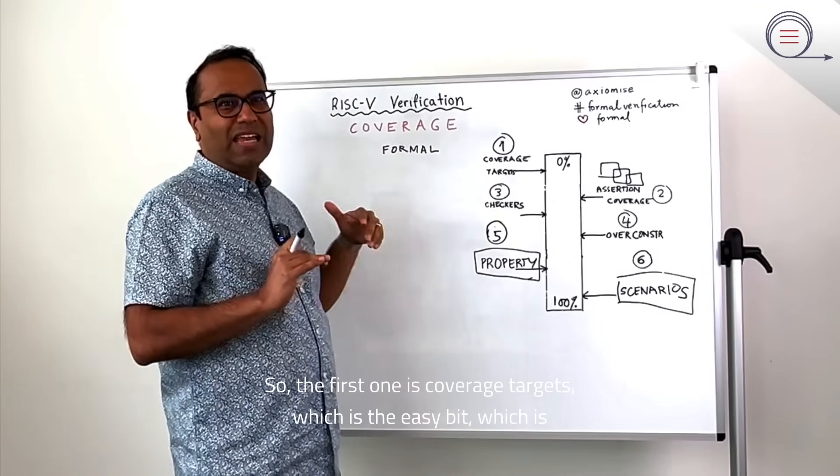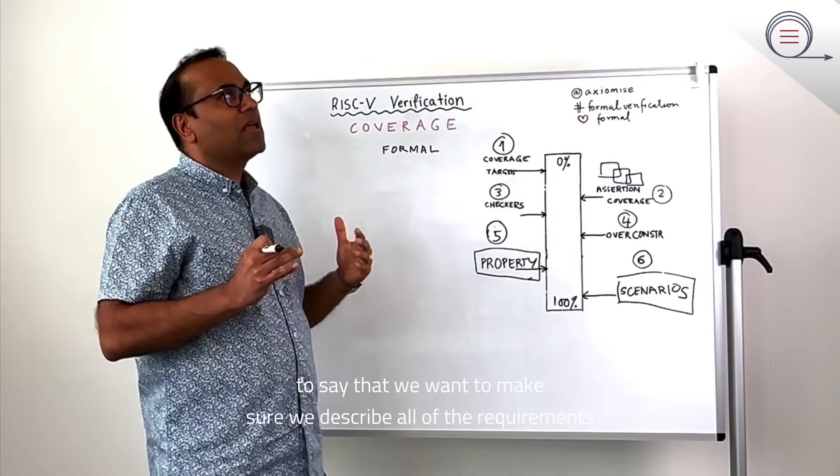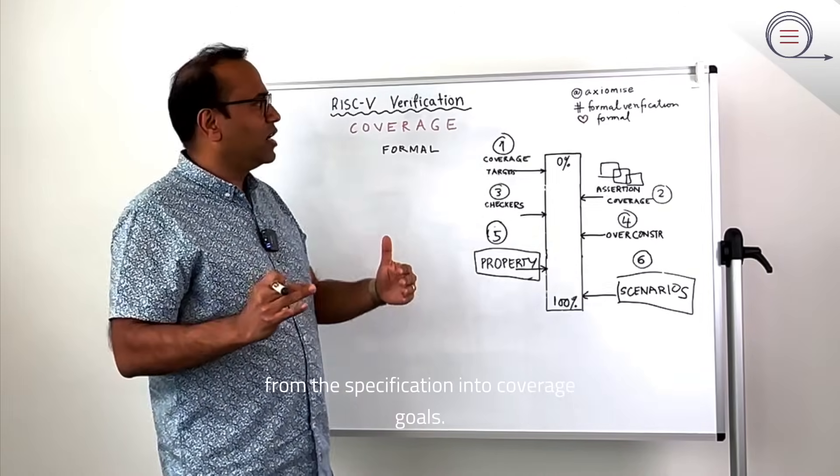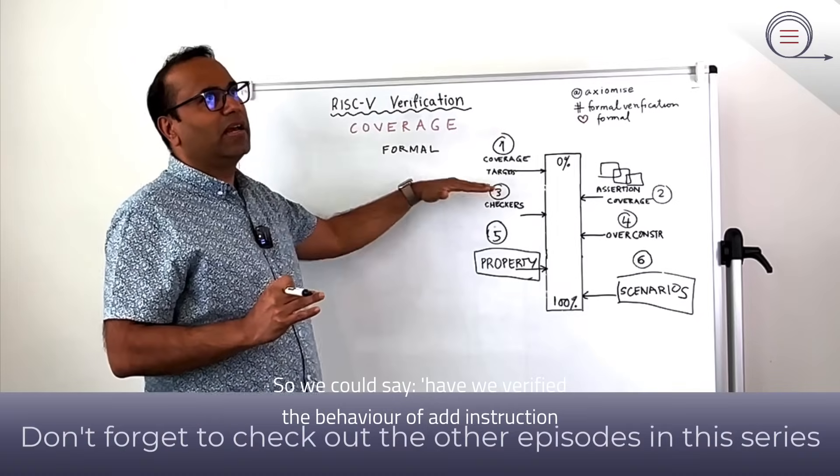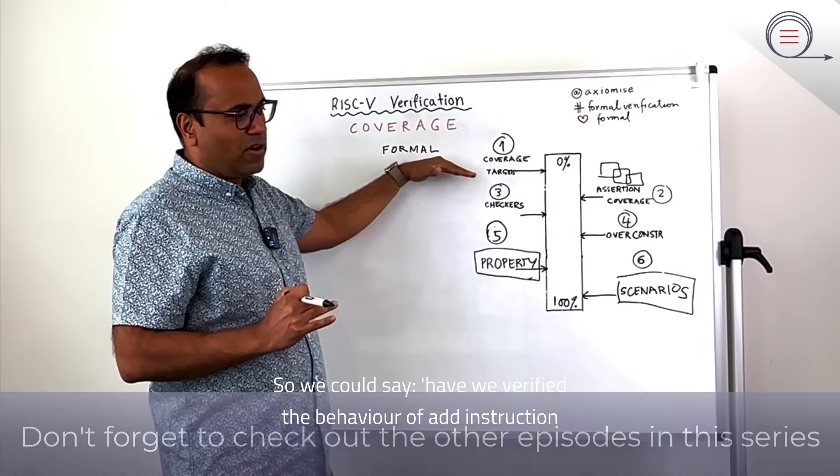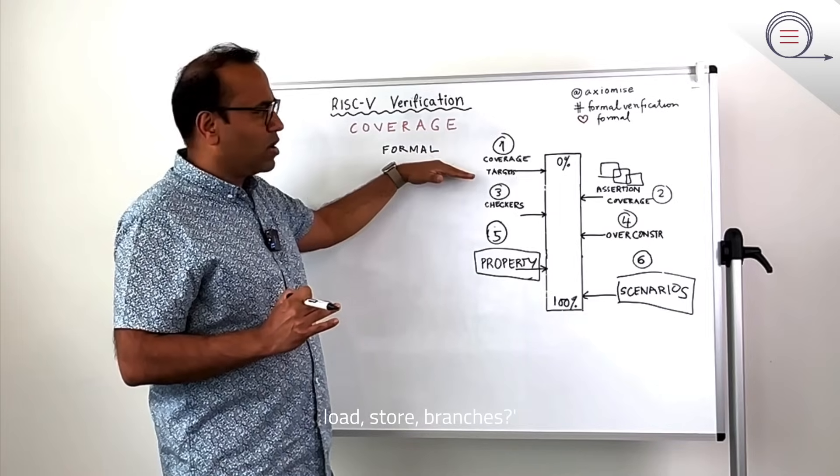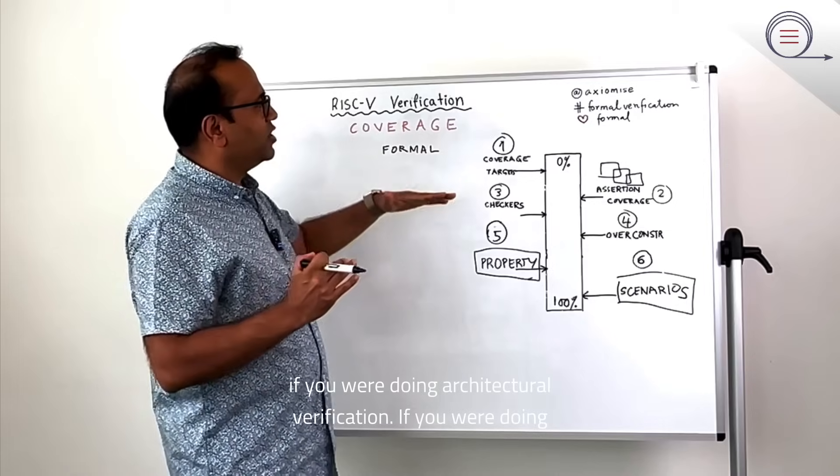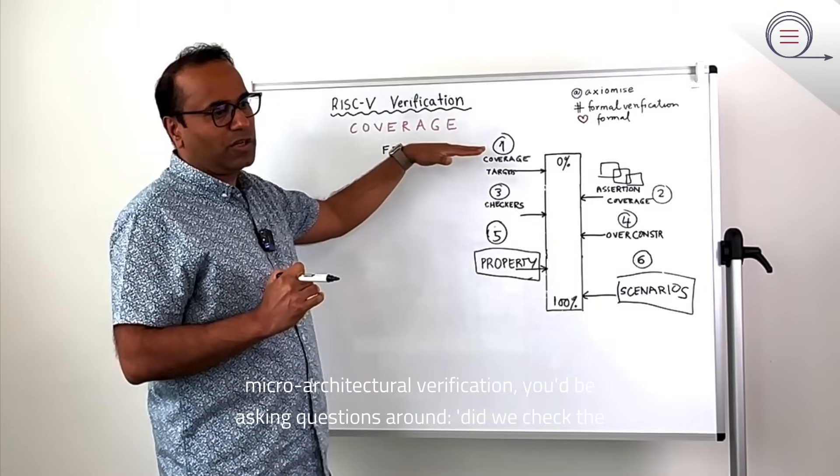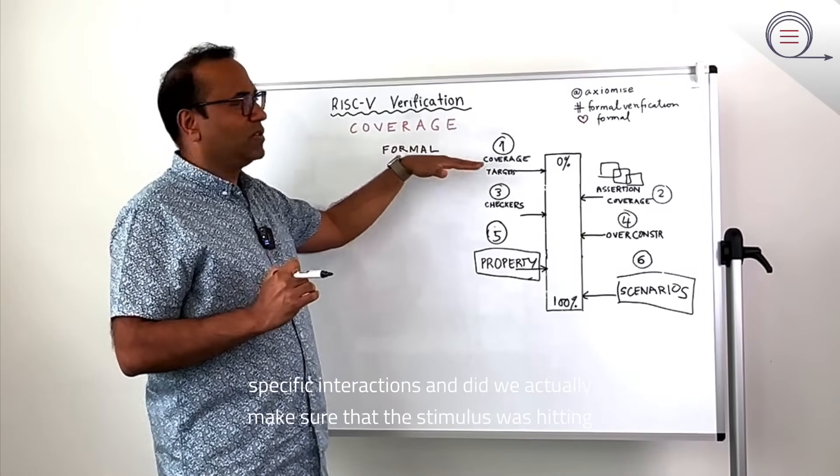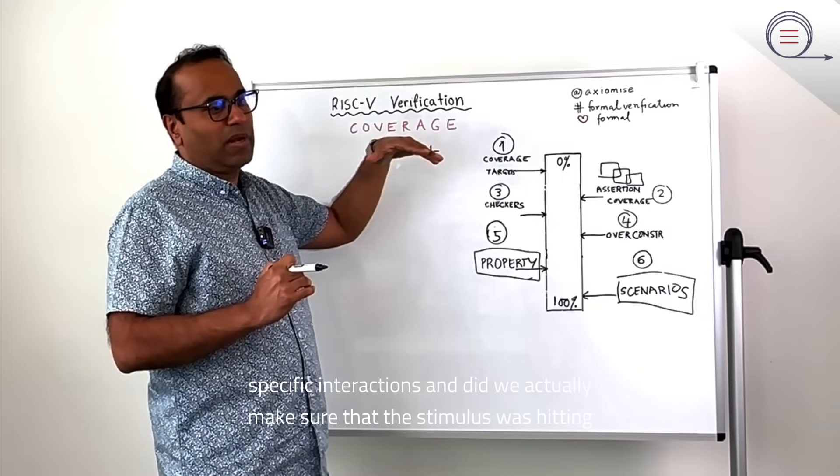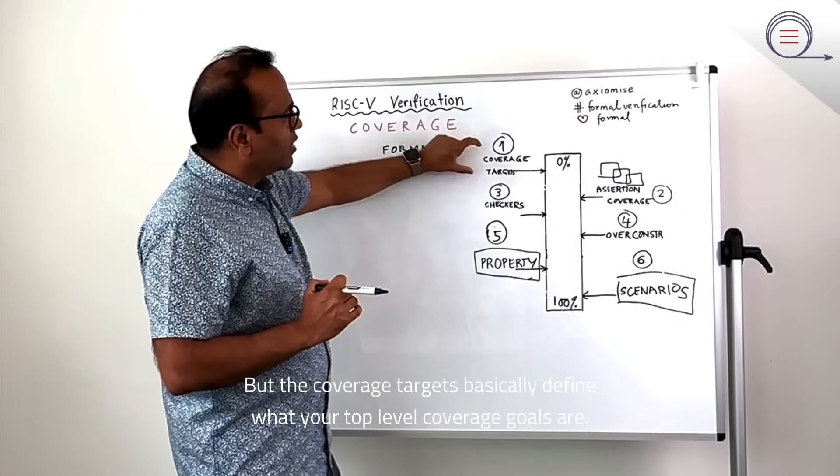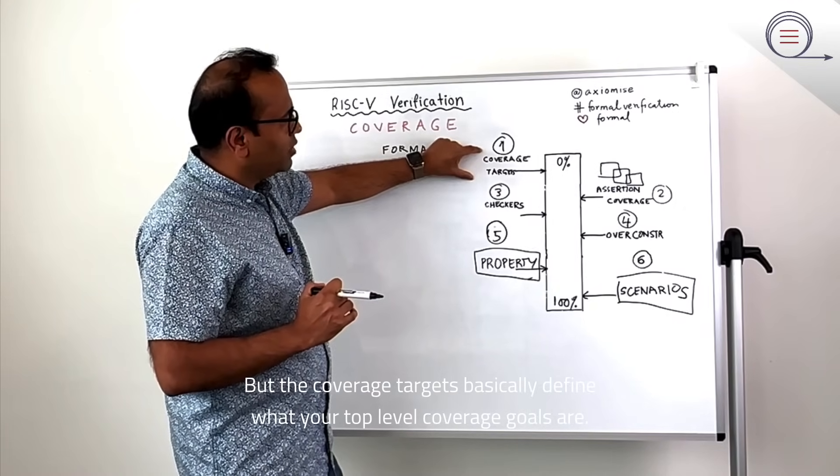The first one is coverage targets, which is the easy bit, which is to say that we want to make sure we describe all of the requirements from the specification into coverage goals. So we could say, have we verified the behavior of add instruction, load, store, branches. If you were doing architectural verification or micro architectural verification, you would be asking questions around, did we check specific interactions? Did we actually make sure that the stimulus was hitting this particular area? But the coverage targets basically define what your top level coverage goals are.